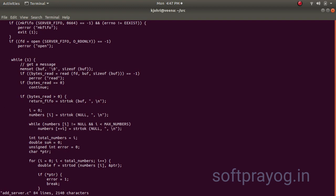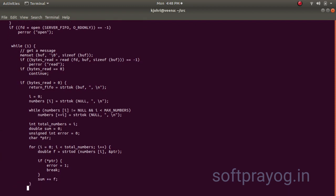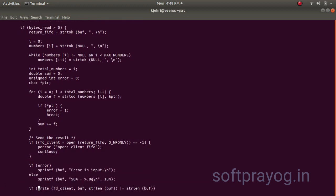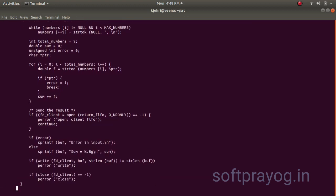So first token is the return FIFO name, the FIFO name of the client. It stores in the return FIFO variable. And then it has an array of pointers to strings, where it stores all the pointers to numbers. Then it converts each string number into a floating point number, and then it adds up all the numbers. The server opens the client FIFO and then it writes the answer back into the client FIFO and closes the client FIFO.